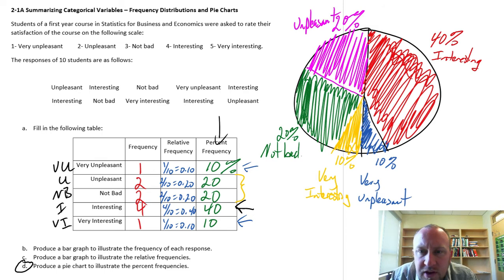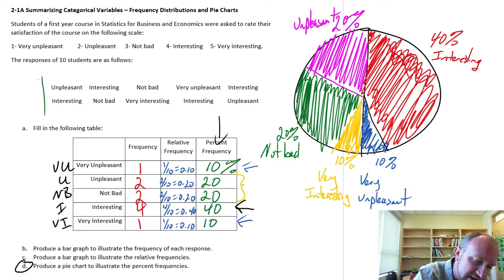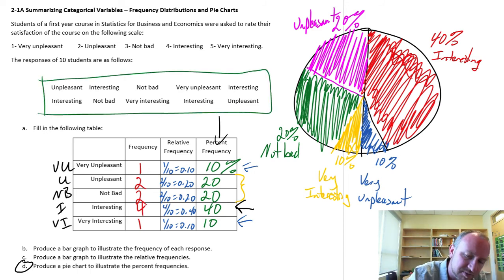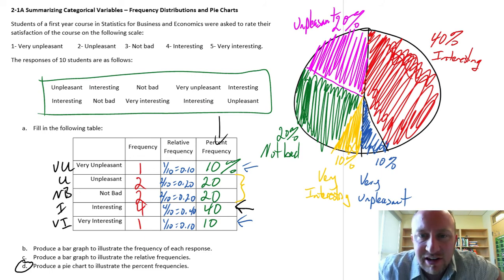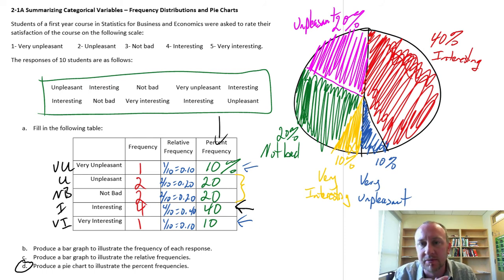OK, so there's our nice colorful pie chart. Again, this just helps to illustrate all of this data. Once again, we only have 10 observations. It becomes increasingly useful and helpful if you have many, many more observations. The more observations you have, the more useful these types of diagrams can be.